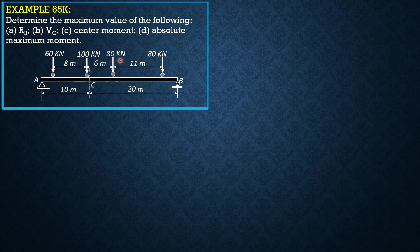For reaction at B, we allow the movement of loads from left to right. There will be no incoming load because 25 is less than 30. So the criterion to be used for reaction would be WH over L minus P1. When the 80 kN load is over B, there will be no minus P1, so initially the sign is positive.